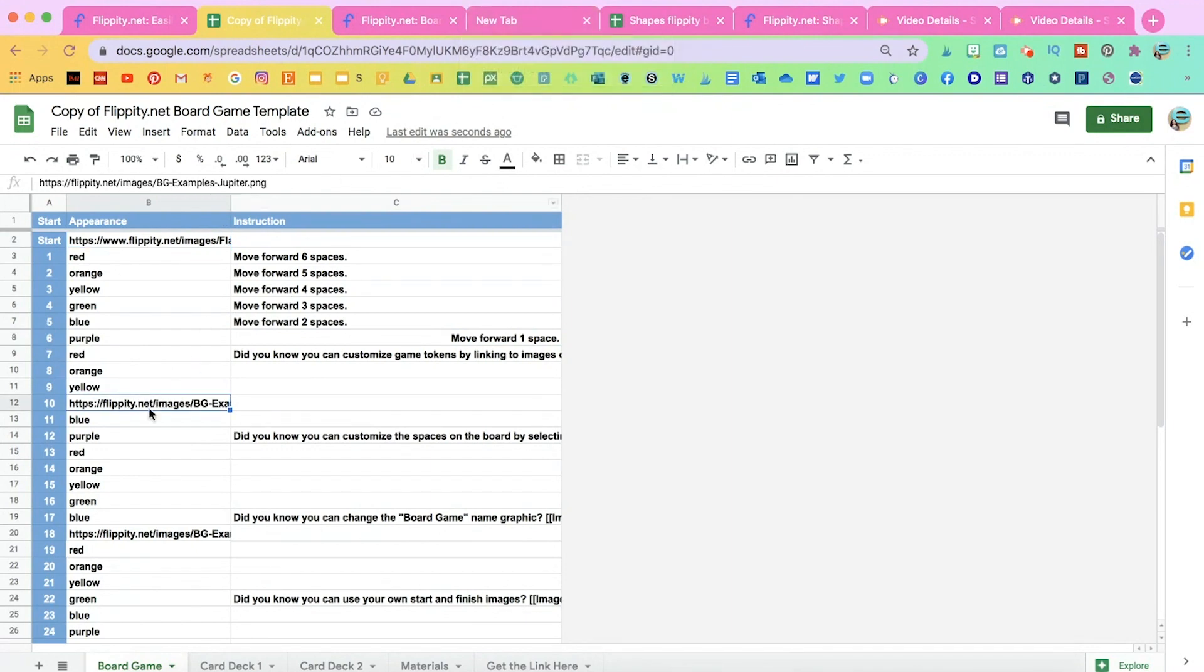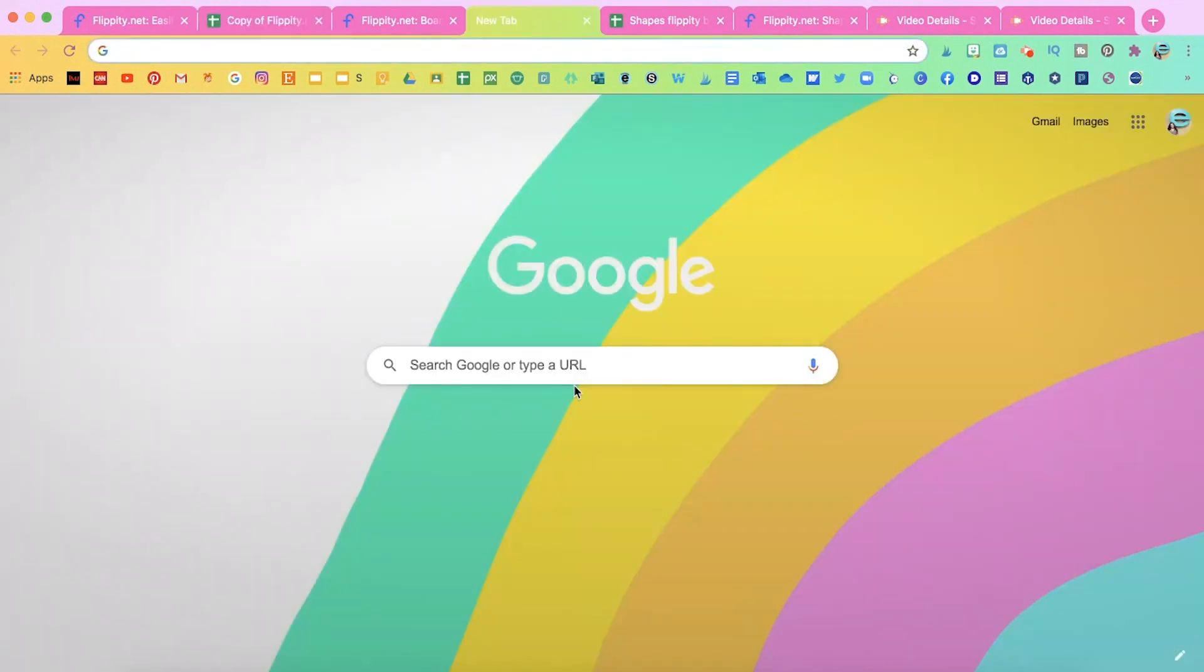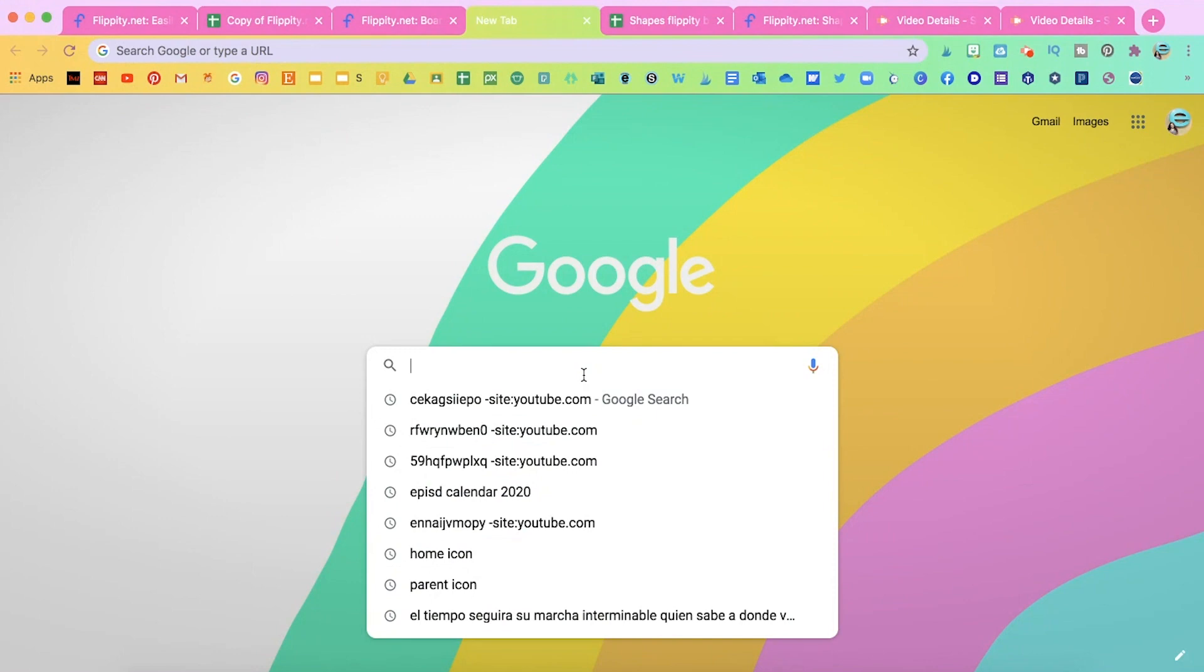So in order to add links, you can't. In order to add a visual, you have to add the URL. You can't just add a visual that you have saved on your computer. So I'm going to go to Google and I'm going to search something that I know my students are going to like.